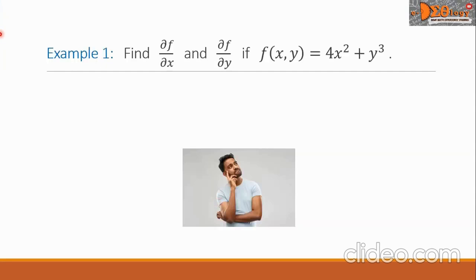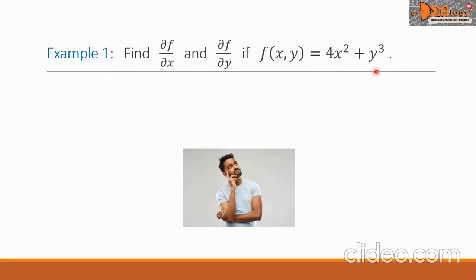Let's have Example 1. Find the partial derivative of f with respect to x and the partial derivative of f with respect to y, if f(x, y) equals 4x squared plus y cubed.